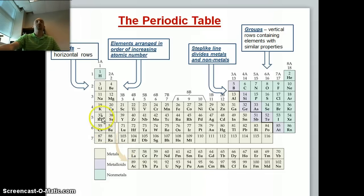The periodic table is divided into periods, which go horizontal rows and groups that go down. The groups are usually rows that contain elements with similar properties. Elements are arranged in order of increasing atomic number, and this step-like line divides metals, which are on the left side, shown in a tannish color, and non-metals, shown in more of a greenish color.